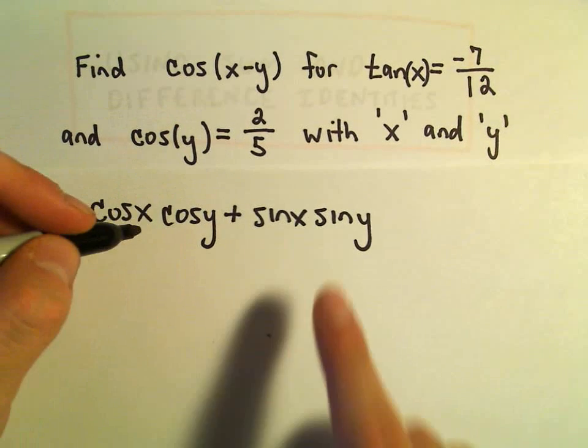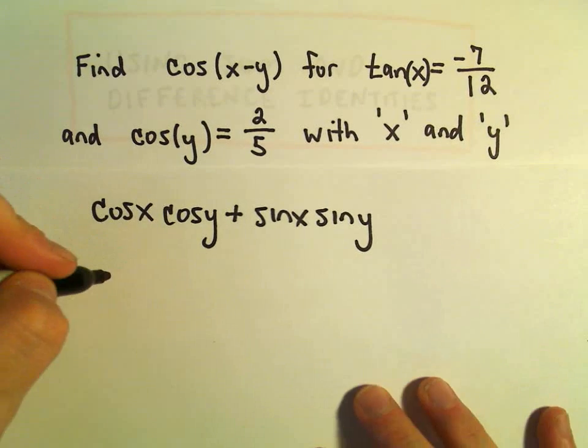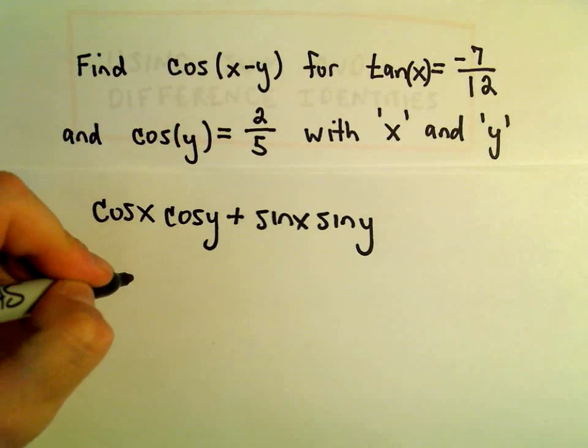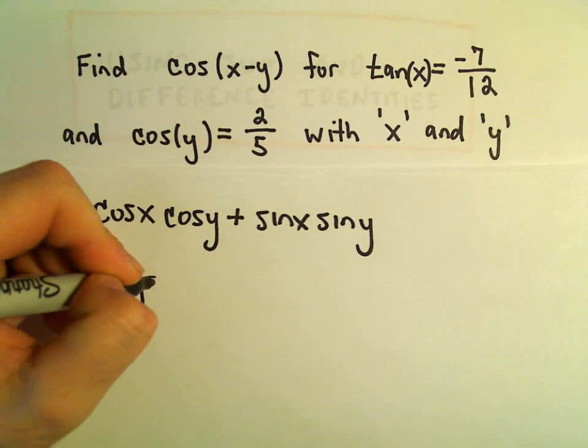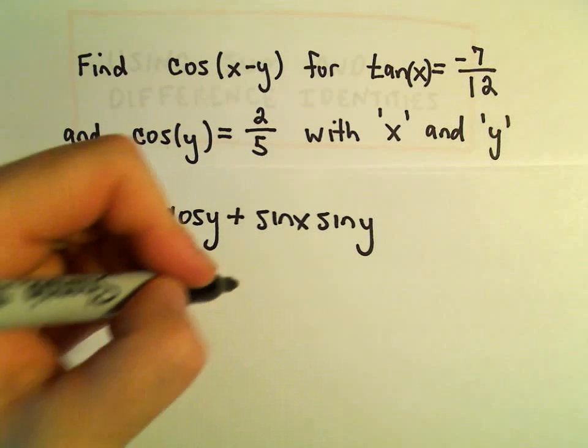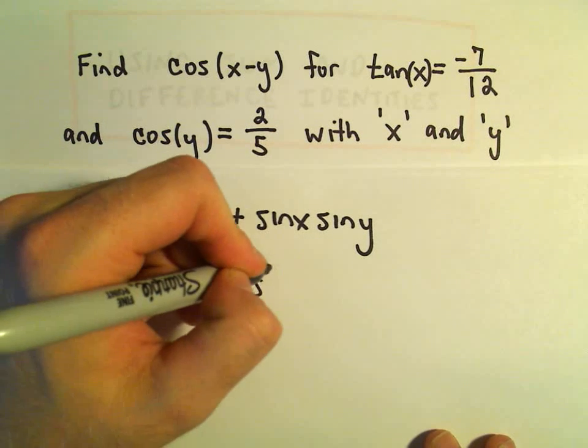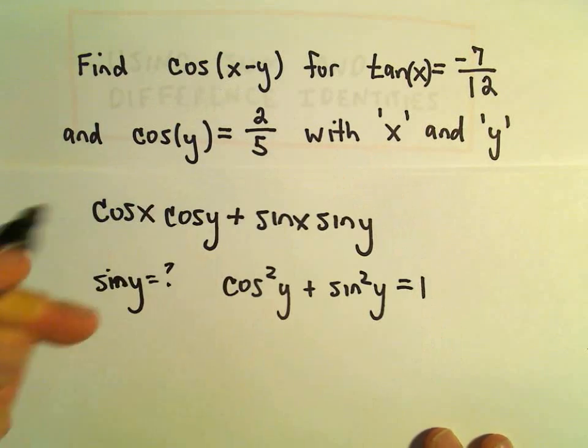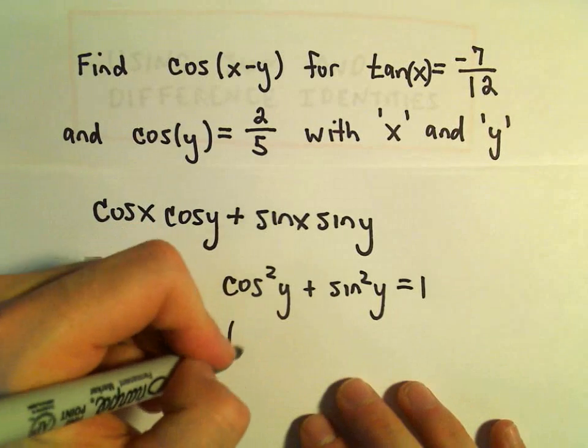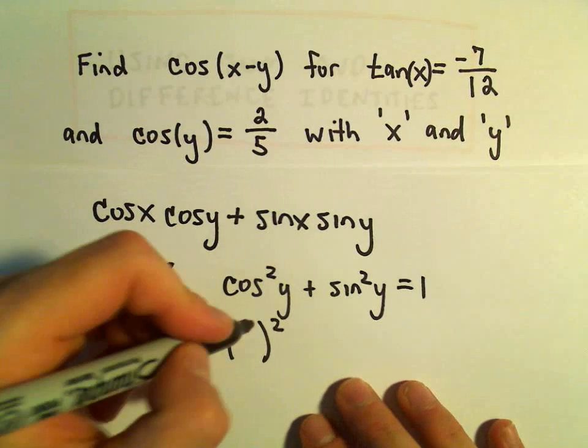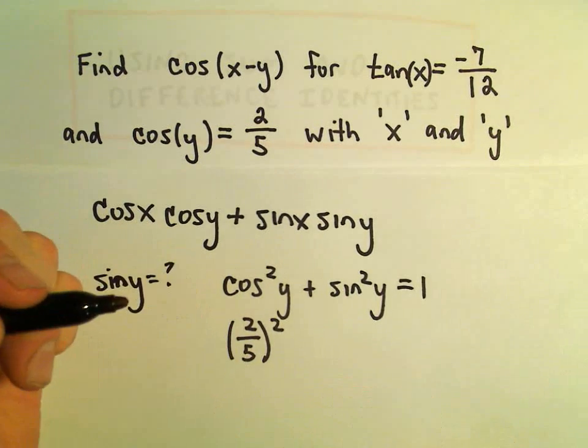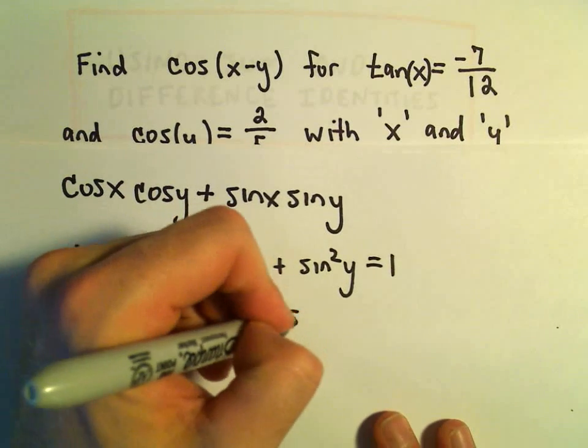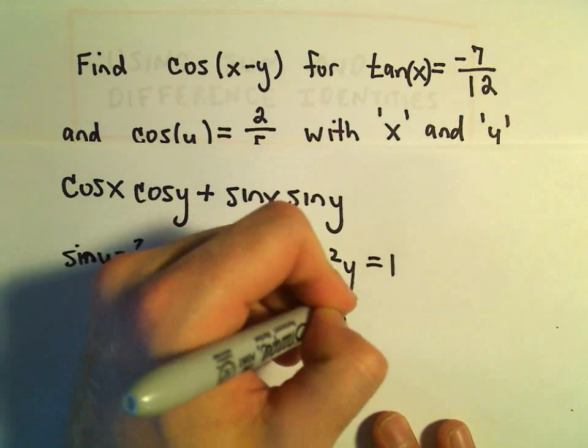First, maybe to figure out the value of sine y. If we want to figure out what sine of y is equal to, recall we've got our identity that says cosine squared y plus sine squared y equals 1. Cosine of y, we're given a value for that, which is 2 fifths. So I can use this identity to simply solve for sine.